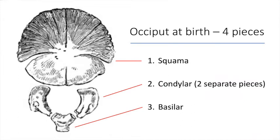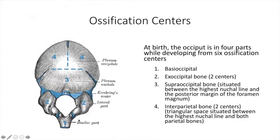Let's look at the occiput. The occiput at birth is in four pieces: you have the squama, two condylar sections, and a basilar section. So we have it in four parts at birth, but it normally develops from six ossification centers.